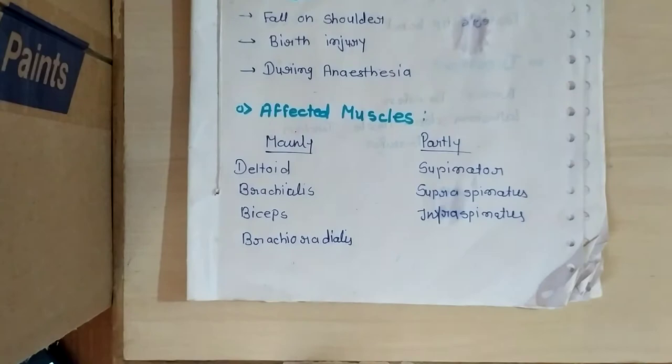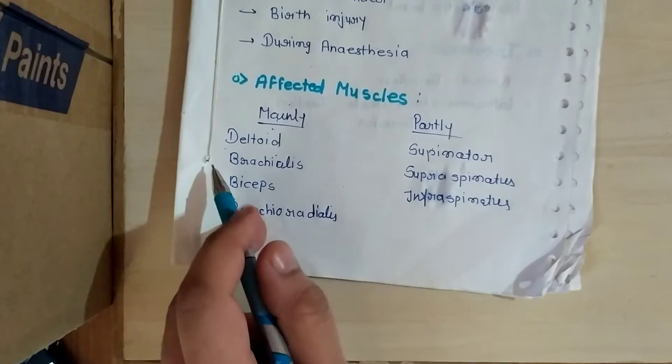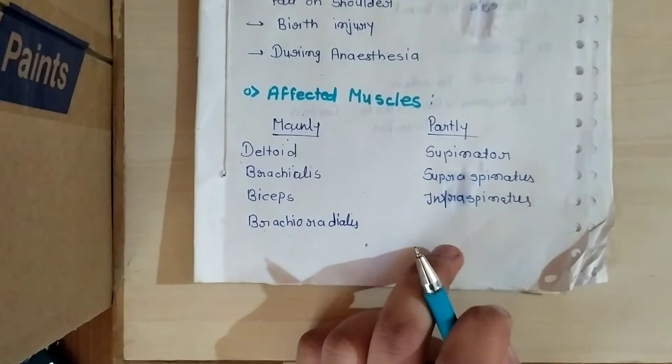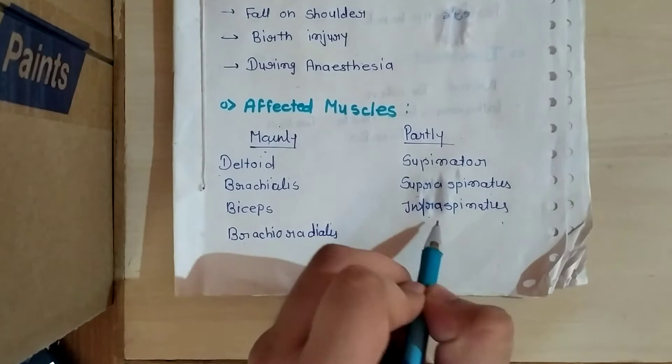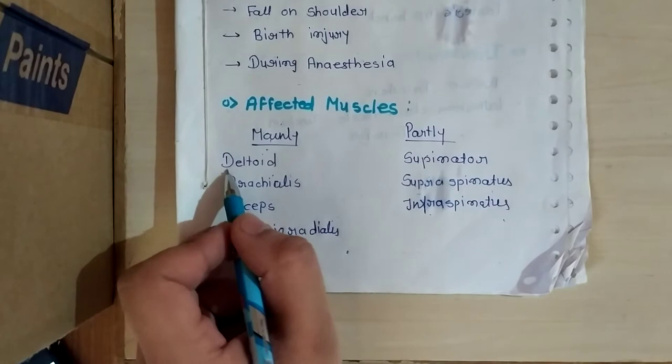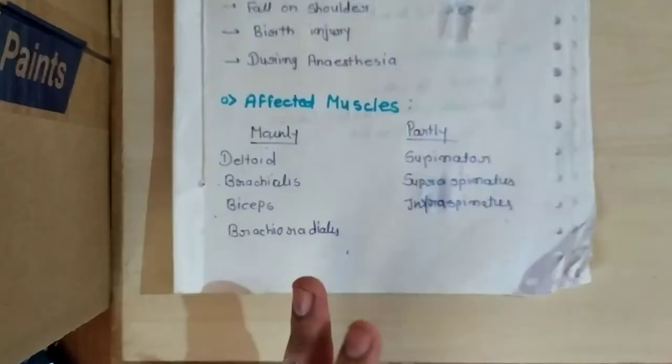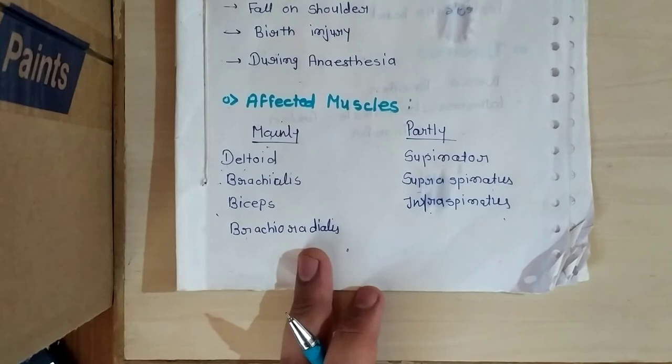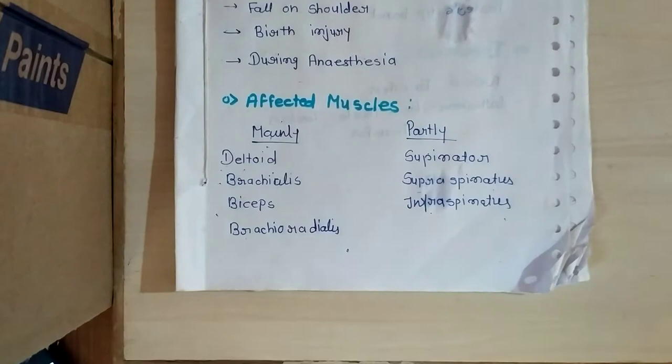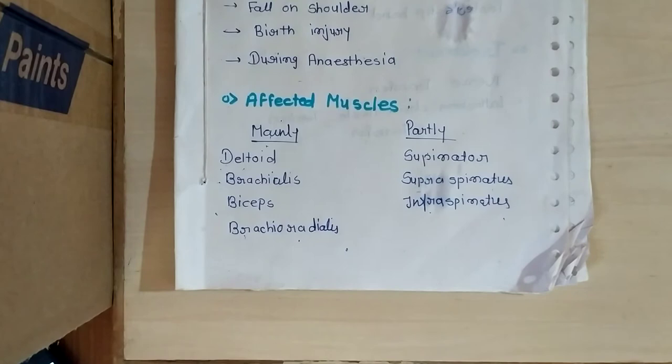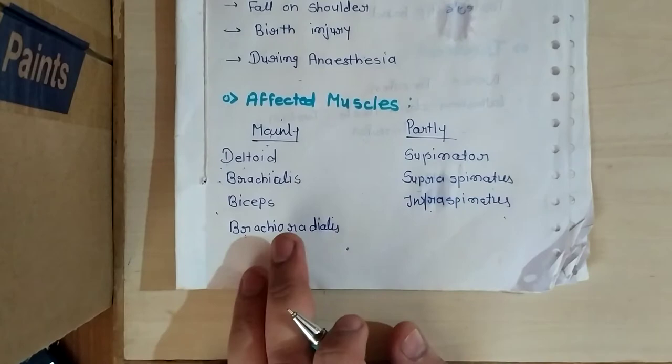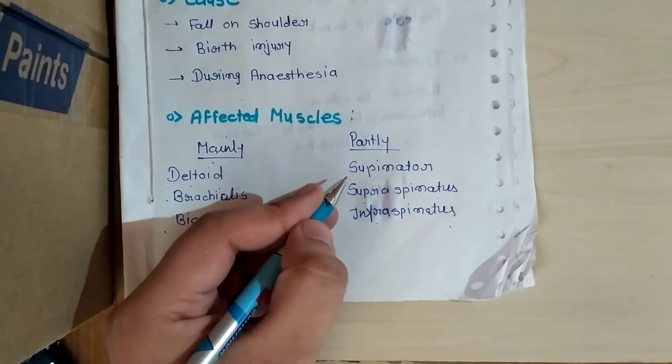What are the affected muscles due to Erb's palsy? Here you can see two main groups. Mainly the muscles damaged are deltoid, brachialis, biceps brachii, and brachioradialis. These muscles are mainly damaged. Partially damaged muscles are supinator, supraspinatus, and infraspinatus. Deltoid muscle is supplied by axillary nerve. Musculocutaneous nerve supplies brachialis and biceps, with root values C5, C6, and C7. Brachioradialis is supplied by deep branch of radial nerve.